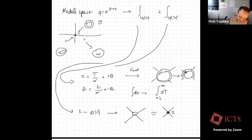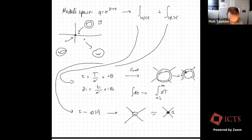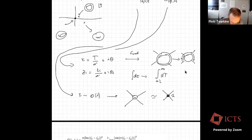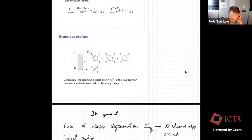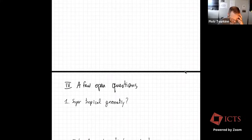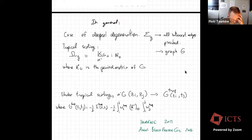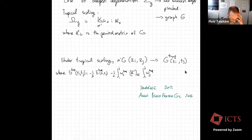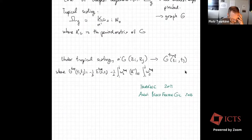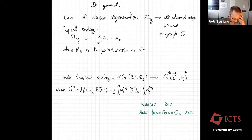This generalizes easily to n points as an integral over M_{0,n}^{trop}. There is also a story about where vertices with weight come from — they relate to UV divergences in field theory, and string theory tells you exactly where they arise — but I won't cover that here.